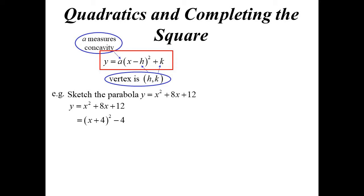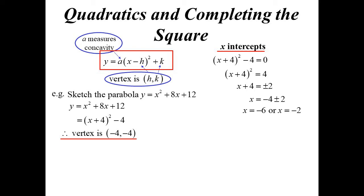So now I can read straight off that—the vertex is (-4, -4). For x-intercepts, now that it's in that form, I could do it by completing the square. Let's move the 4 over and we end up with -6 and -2.